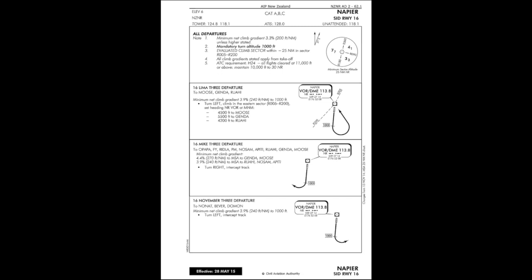So to do our standard instrument departure, we're going to need our departure plate. We've got our NAV2 departure plate here and we'll need to brief it to make sure we've got the right plate. So NAV2 said runway 16 — that's correct. Category A, B and C — this aircraft is a Category B aircraft. Elevation 6 feet and the plate is effective the 20th of May 2015, so we've got the right date.